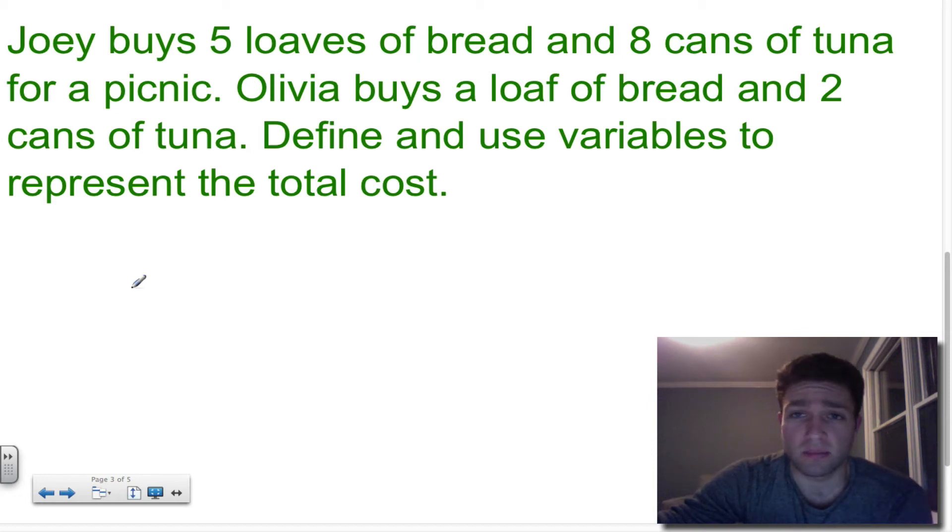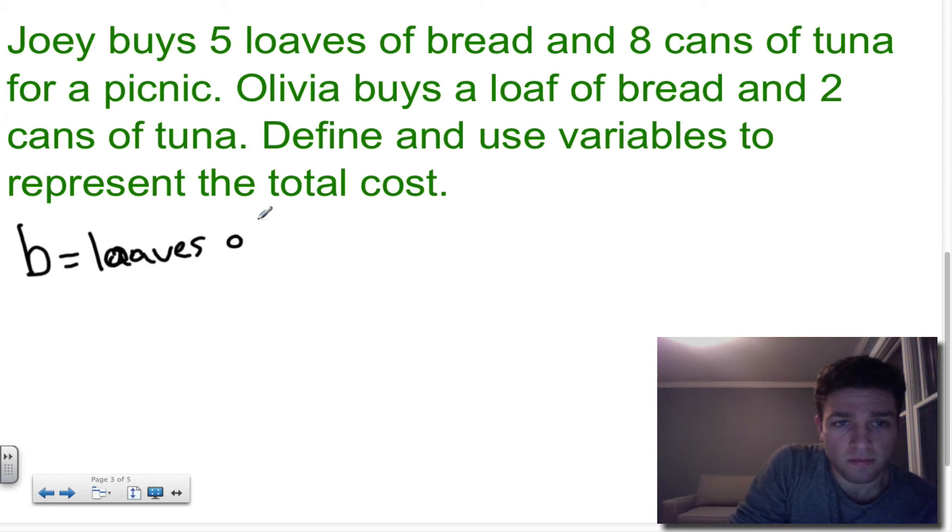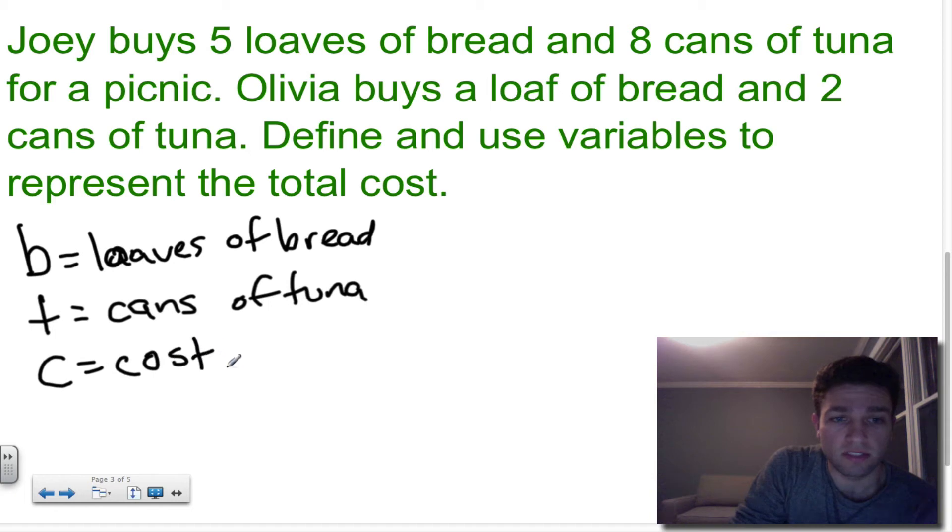So let's look at a word problem now where we have to define our own variables. Joey buys five loaves of bread and eight cans of tuna for a picnic. Olivia buys a loaf of bread and two cans of tuna. Define and use variables to represent the total cost. Well, I already see two things I'm definitely going to have to give a variable. One of those things is the bread. So I'm going to use b for loaves of bread. And then I'm also going to need something for tuna, so t for cans of tuna. And I also know that I'm looking to represent the cost, so I'm going to use c for cost.